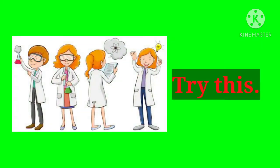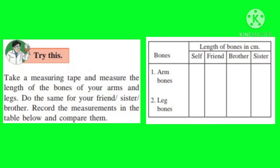Take a measuring tape and measure the length of the bones of your arms and legs. Do the same for your friend, sister, or brother. Record the measurements in the table below and compare them.